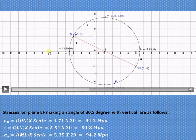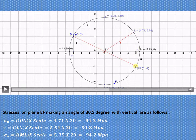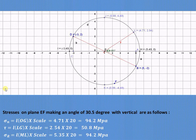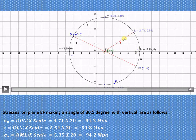Normal stresses are measured along the x-axis and shear stresses along the y-axis. Drawing a vertical axis through the center of the Mohr's circle, it intersects the circle at point J with coordinates (0.98, 4.49). To find stresses on the inclined plane EF at 30.5°, we mark point L on the circle such that angle BEL equals twice 30.5°, which is 61 degrees.